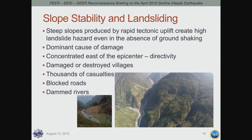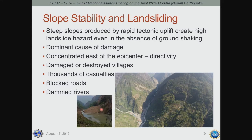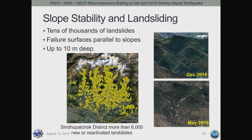Landslides are estimated in the tens of thousands. Failure surfaces were generally parallel to the slopes, with some cases up to 10 meters deep. In one district alone, there were an estimated 6,000 new or reactivated landslides. Google Earth was used extensively to distinguish existing landslides from new ones as part of ongoing studies.